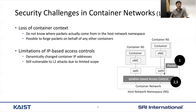Second, there are some limitations in IP-based access controls used by container networks, especially IP tables. Current network policies are mostly defined based on the IP addresses of containers. Even though some secure solutions use labels instead of IP addresses to define network policies, such labels still need to be changed to specific IP addresses internally. Since all access controls are done by IP addresses, container networks are still vulnerable to spoofing attacks.